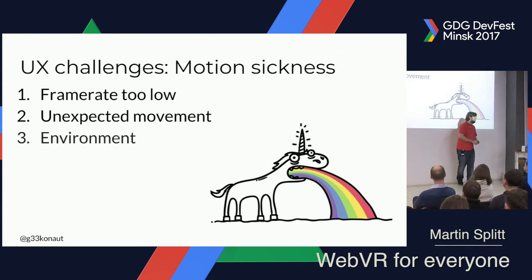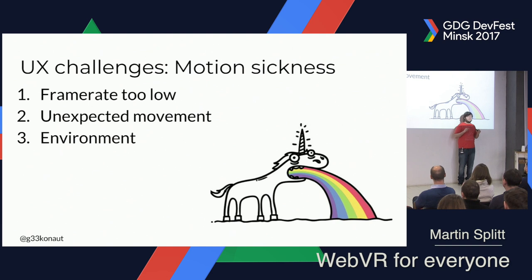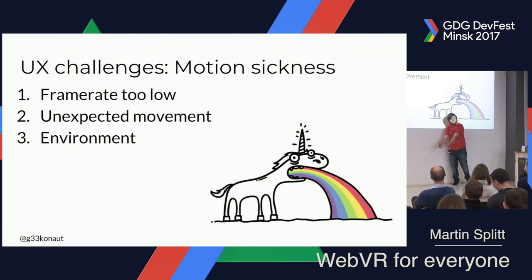Also, if the environment is constantly changing, you can actually scare people as well. If you have the floor breaking away and the user appearing to fall without actually physically falling, the brain goes: I'm not falling, but I see I'm falling. So I might be poisoned, I might have eaten something bad. So I'm going to remove it from the body. Bucket full of fun.